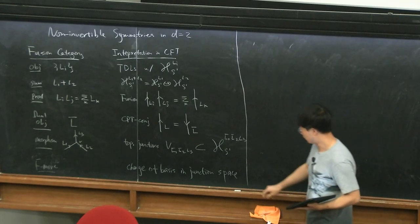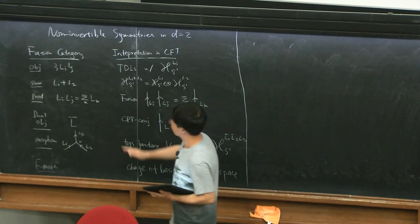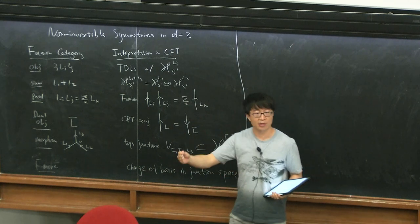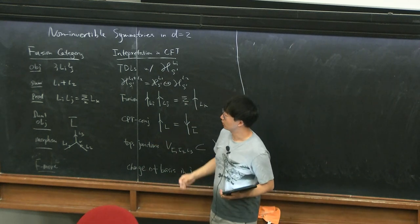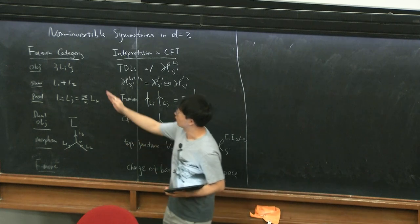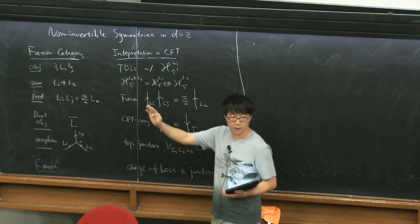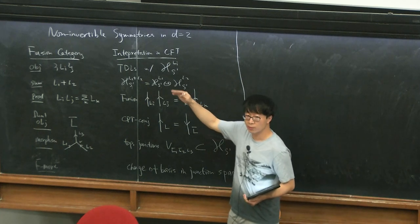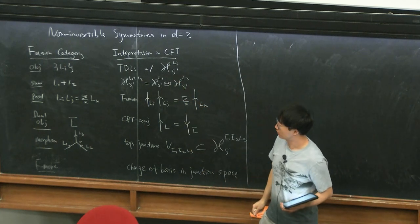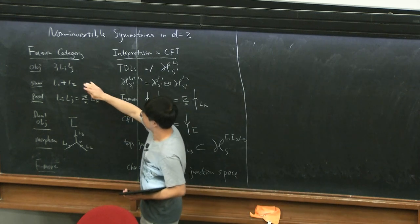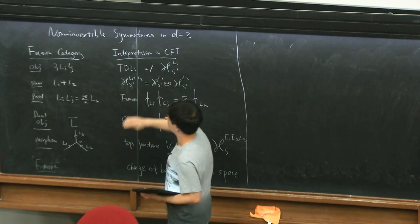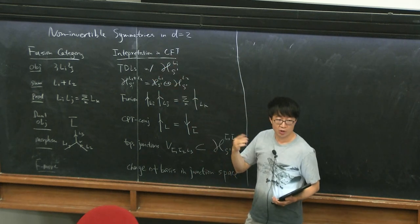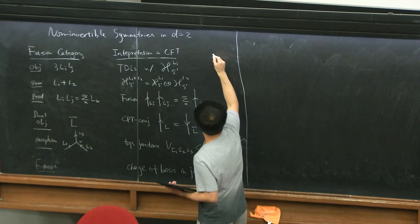In the previous lecture, we introduced a mathematical framework known as fusion category, which is a natural generalization of group symmetries taking into account their anomalies into some more general object. We used this later to describe symmetries in conformal field theory that are associated with non-invertible topological defects. Objects in this fusion category correspond to topological defect lines, and in the CFT they are associated with the twisted defect Hilbert space.